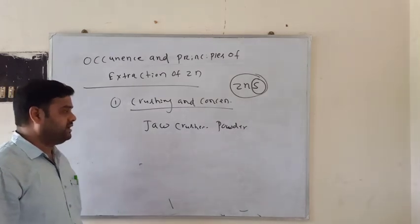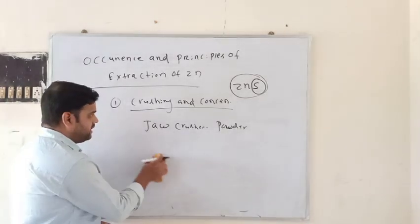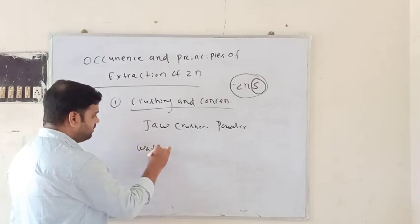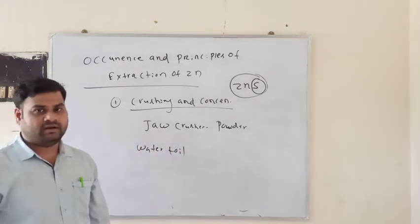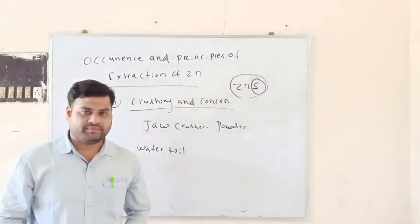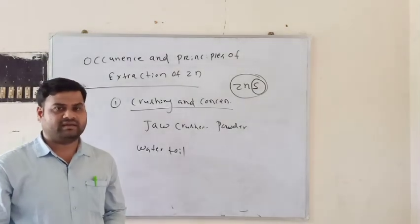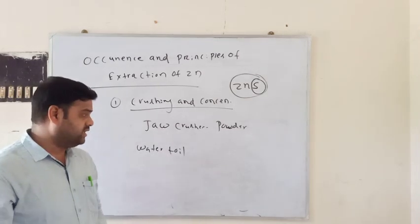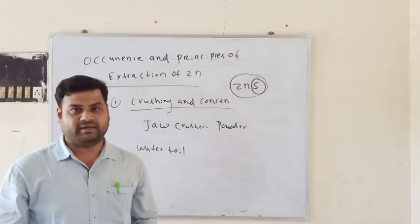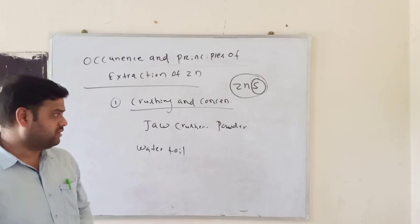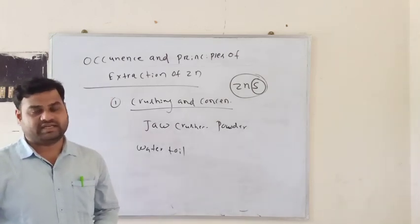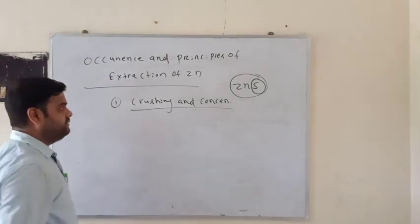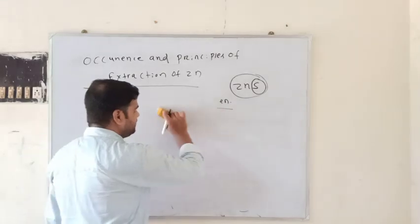In the froth flotation process, the powdered ore is mixed with water. By supplying a high flow of air at the surface of the iron tank, the sulfide ores rise with the froth to the surface. The froth is collected, giving concentrated zinc sulfide ore. This completes the froth flotation concentration process.